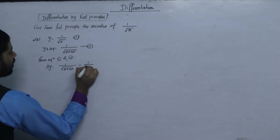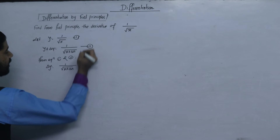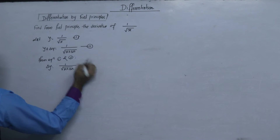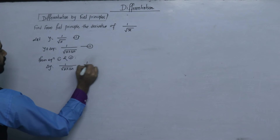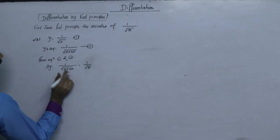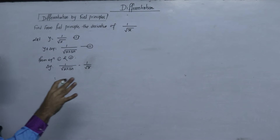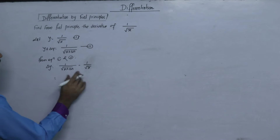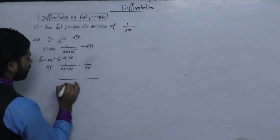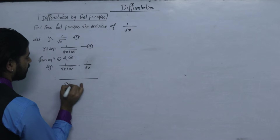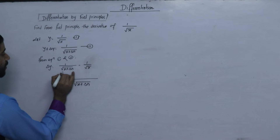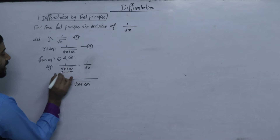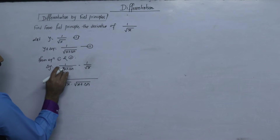This gives delta y equals 1 upon root under (x plus delta x) minus 1 upon root under x. With further simplification, we can rewrite this as 1 upon root under (x plus delta x) minus 1 upon root under x.